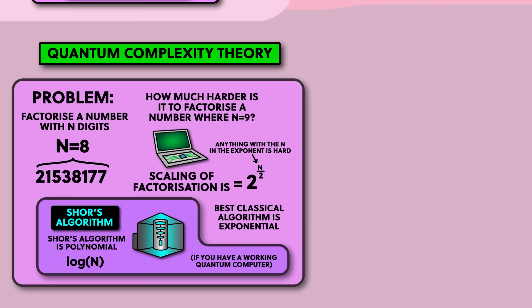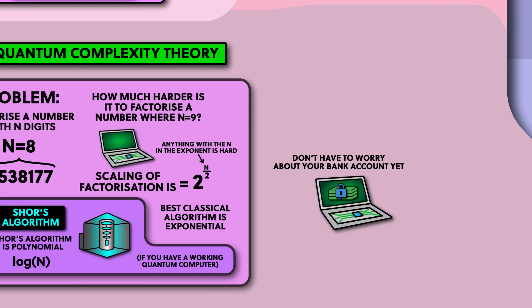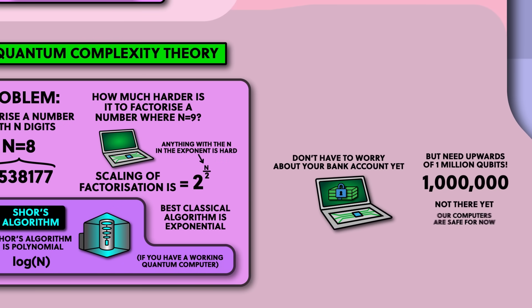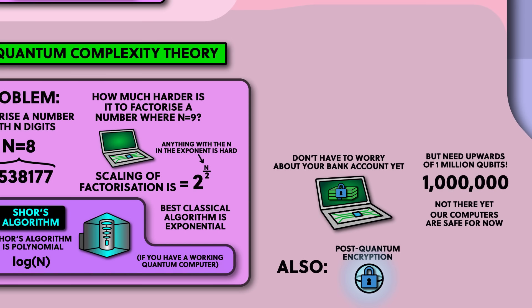But you don't need to worry about the security of your bank account yet because today's quantum computers are not able to run Shor's algorithm on large numbers yet. I've estimated that they'd need about a million qubits to do so, but so far the most advanced universal quantum computers have around a hundred. Also people are working on what's known as post-quantum encryption schemes which don't use integer factorisation. And another technology from the world of quantum physics can help here too — a cryptographic scheme known as quantum cryptography.